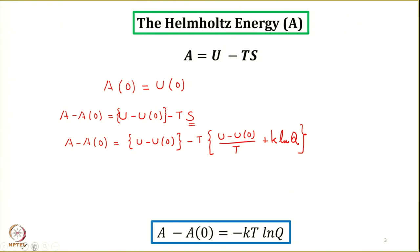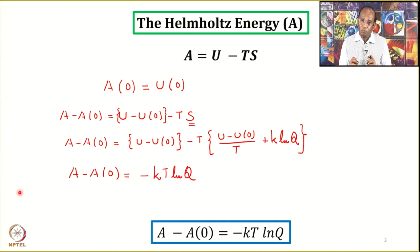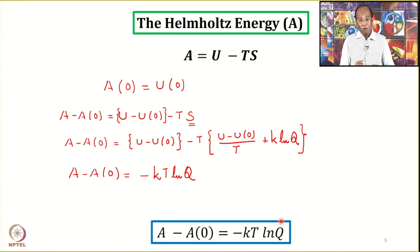So we have the expression A - A₀ = -kT ln Q for Helmholtz energy. Depending upon the system, you will decide whether to use Q = q^N for distinguishable particles or Q = q^N / N! for indistinguishable ones.